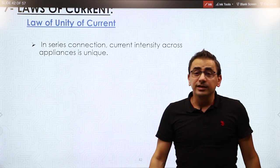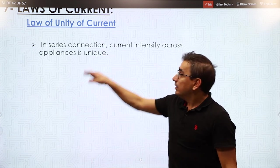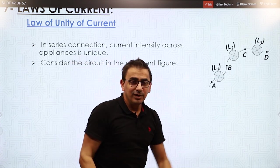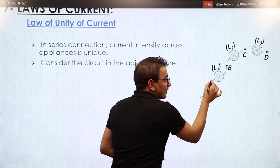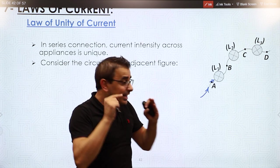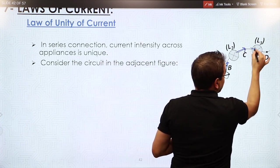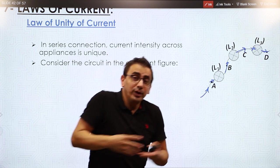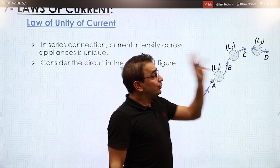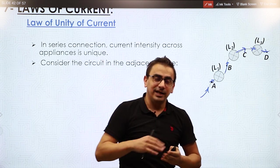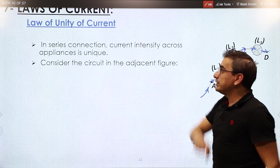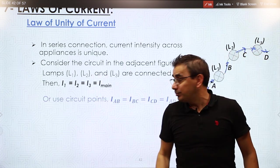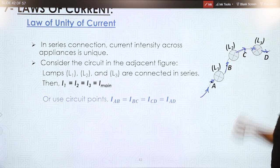In series, current is unique - the law of unity of current in series. In a series connection, the current flowing through all devices is the same. When the current flows through L1, the same quantity of charge flows through L2 and continues towards L3. No charge is stored in L2 or L3 - all charge entering one lamp exits it and enters the next. So mathematically: I1 equals I2 equals I3 equals I main. Using circuit points: IAB equals IBC equals ICD.